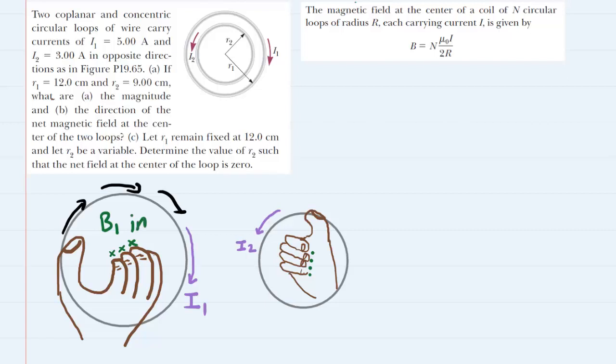On the other hand, pun intended, we have drawn a right hand grasping the smaller loop and this time the thumb needs to be pointing in a counterclockwise direction because current I2 is going counterclockwise. In this case then your fingers will be naturally curling out of the loop or out of the computer screen. This means the magnetic field will be pointing out of the screen. So B2 will be pointing out of the screen.